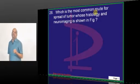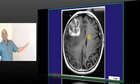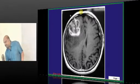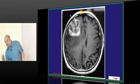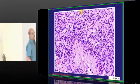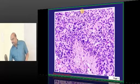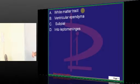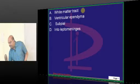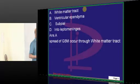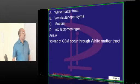What is the most common route of spread of a tumor whose histology and neuroimaging has been shown? In the neuroimaging you are seeing a contrast enhancing lesion which is cystic in nature in the brain as a space occupying lesion. So it could be a tumor. In the histology being shown there are anaplastic cells of the glioma, otherwise called glioblastoma multiforme. How does glioblastoma multiforme spread? It is through the white matter tracts that the glioblastoma multiforme will be traveling.